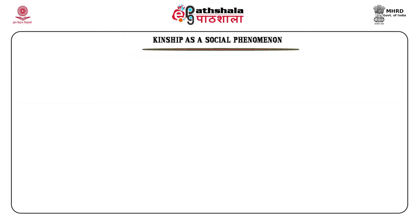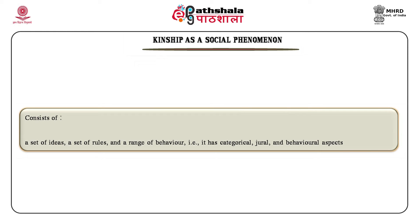Kinship is defined as a social relationship based upon family relations. The nature of this relation can be both conjugal or affinal, that is based on marriage, and consanguineal, which is based on the ideas of blood. Kinship system is referred to as a structured system of statuses and roles in which the kin — primary, secondary, tertiary and distant — are bound to one another by complex interlocking ties. Murdoch defines kinship system as a structured relationship in which kin are bound to one another by complex interlocking ties. Kinship terminologies may be elementary, derivative, descriptive or classificatory.